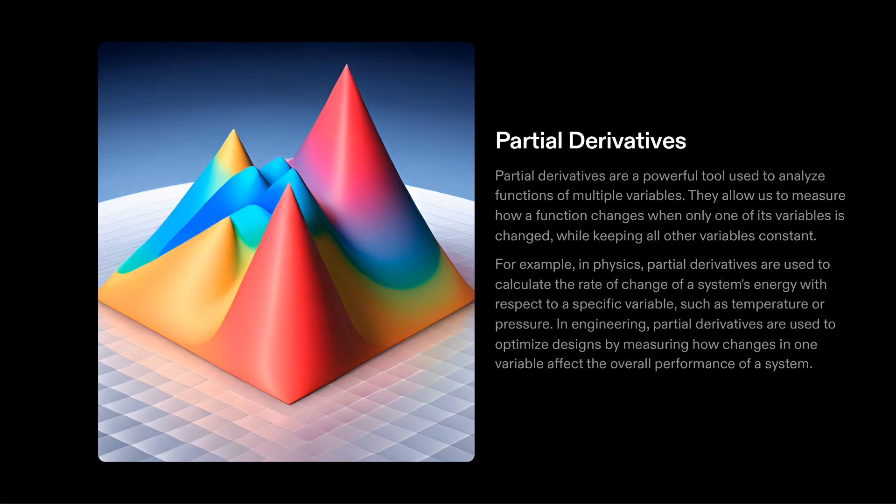For example, in physics, partial derivatives are used to calculate the rate of change of energy when it relates to a single variable like temperature or pressure.